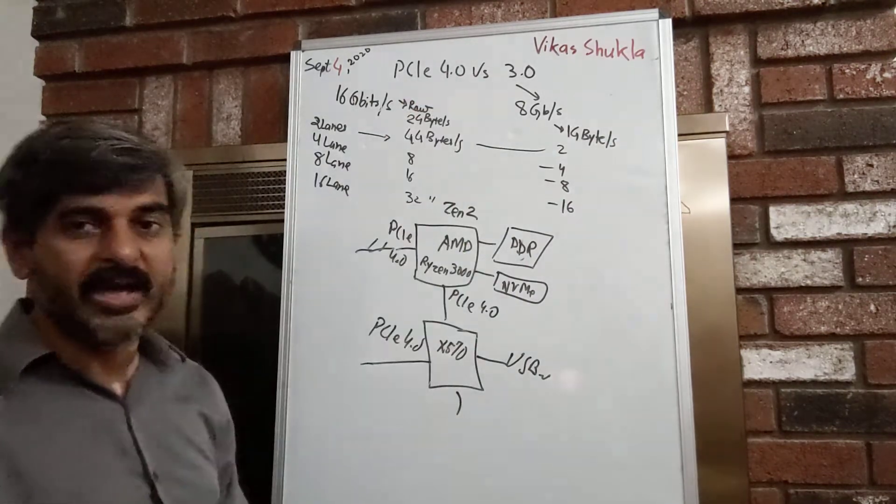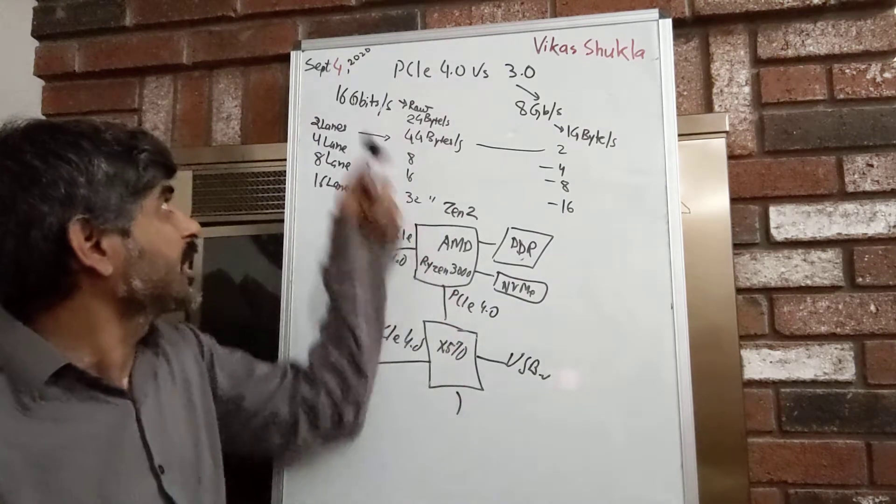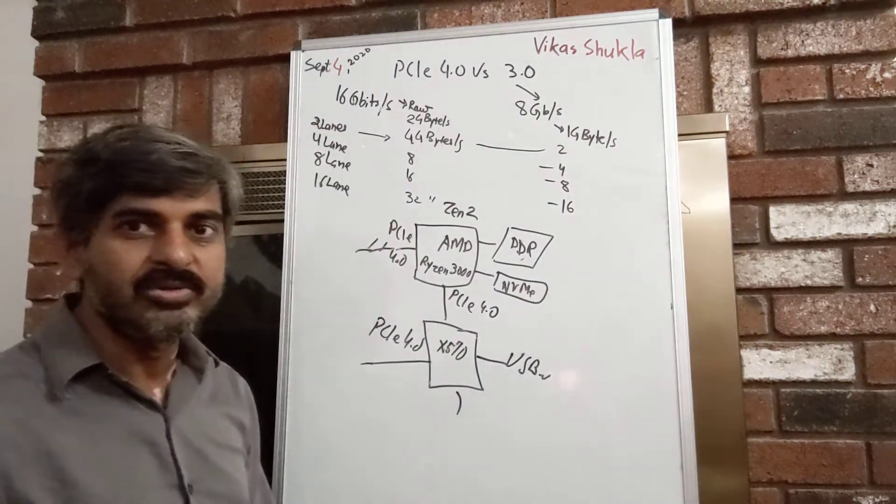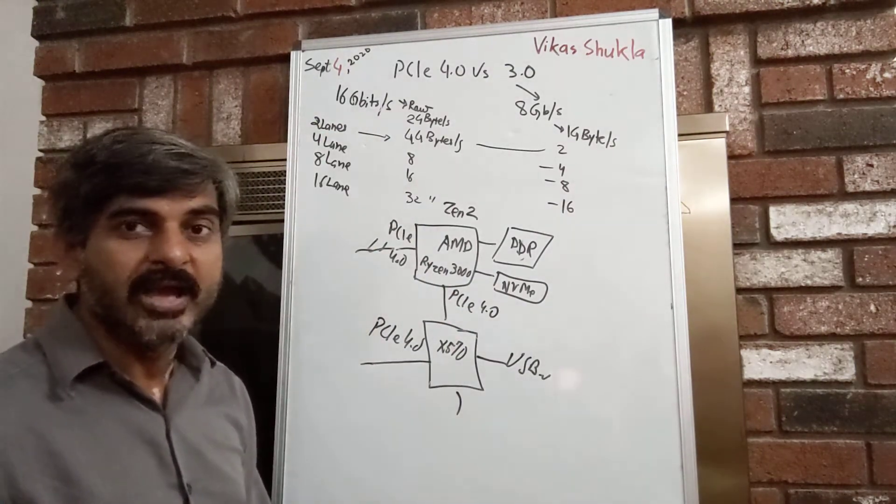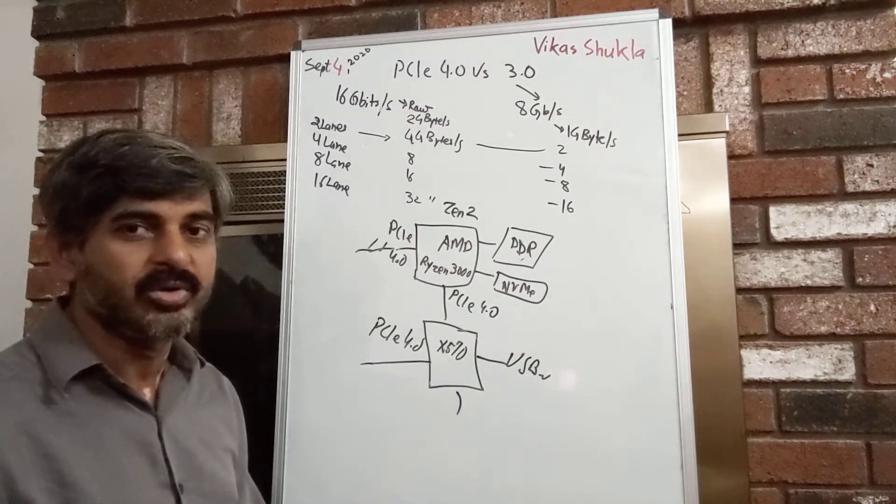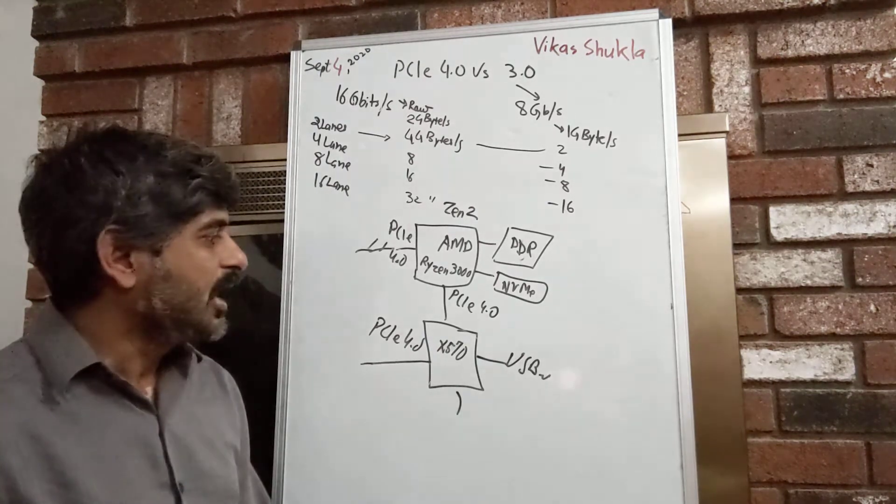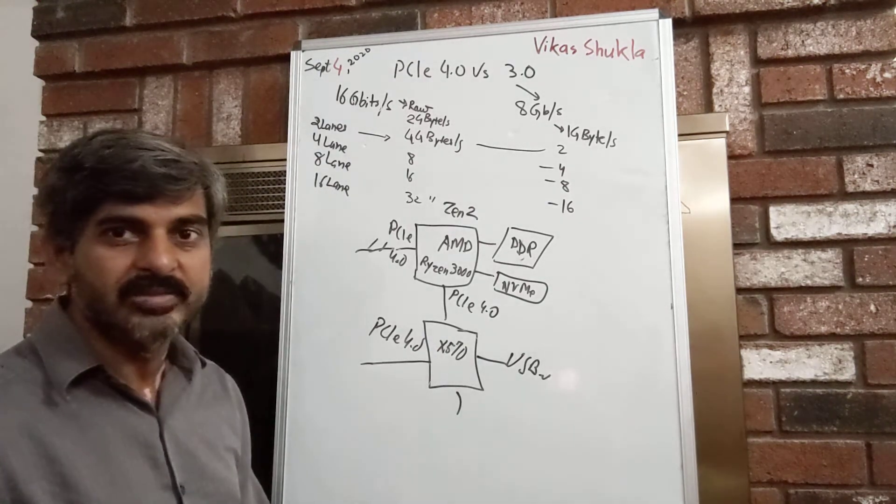If you move on to PCI Express 5.0, there are special levels used, and that again doubles to 32 gigabits per second. And that will start coming up in 2021. And then we have PCI Express 6.0, again doubles to 64 gigabits per second. That we'll talk about in detail sometime later.